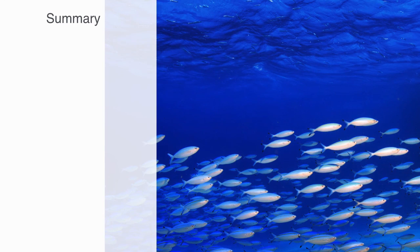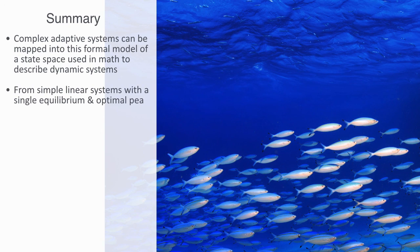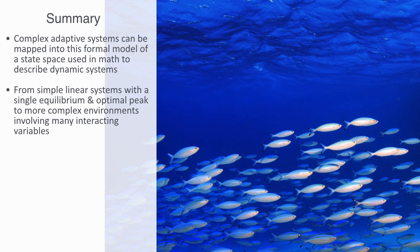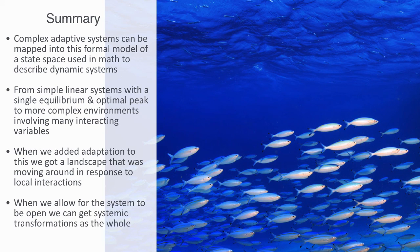In this module, we've been talking about complex adaptive systems as a framework for modeling economic organizations. We've tried to show how complex adaptive systems could be mapped into a more formal model of a state space used in mathematics to describe dynamical systems. We looked at the different types of topologies of these adaptive landscapes — going from simple linear systems with a single equilibrium and a single optimal peak, to more complex environments involving many interacting variables creating a rugged topology. When we added adaptation, we got a landscape that was moving around in response to local interactions. We talked about how, when we allow the system to be open, we can get systemic transformations as the whole topology changes due to new input values from its environment. Finally, we talked about different optimal strategies given these different environments — going from simple optimization algorithms to more complex strategies requiring continuous adaptation and maintenance of diversity.